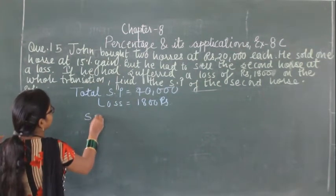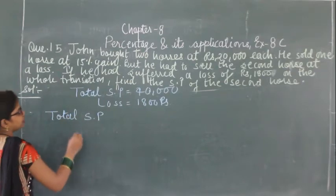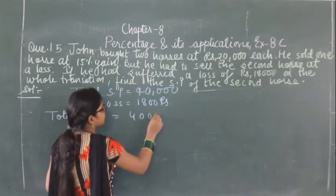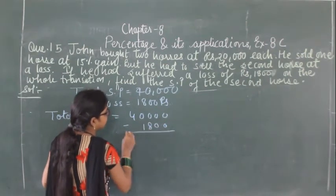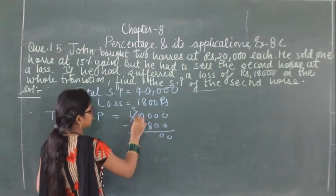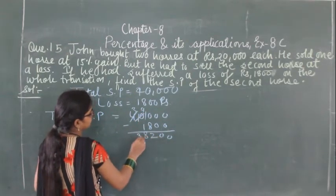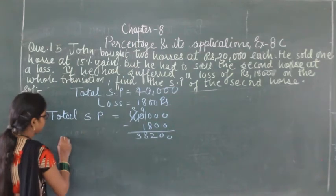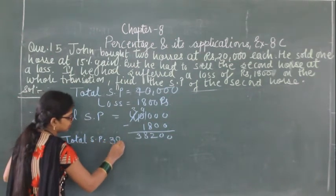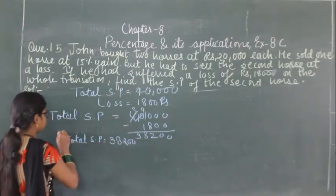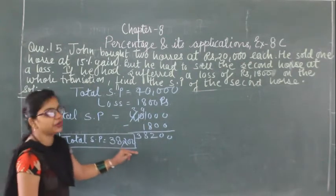Total selling price equals 40,000 minus 1,800, which gives us 38,200 rupees. Wait — total selling price is 38,200 rupees.